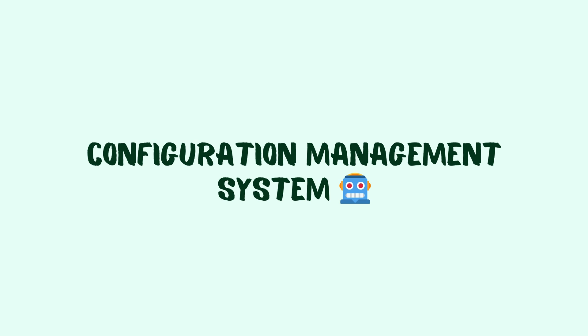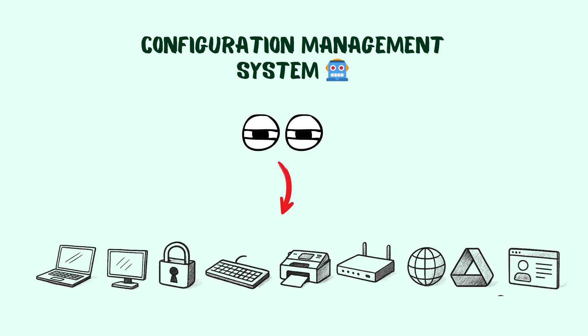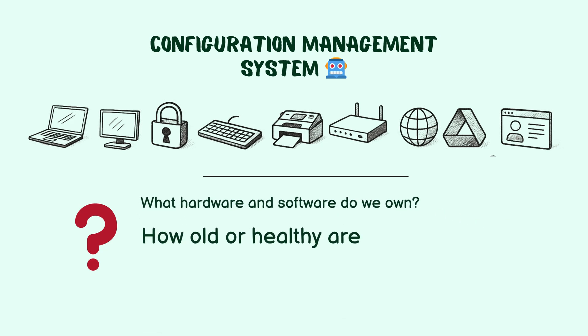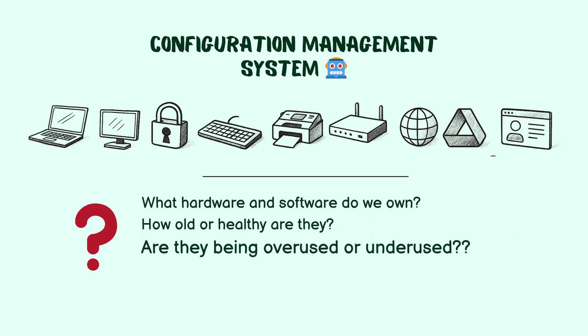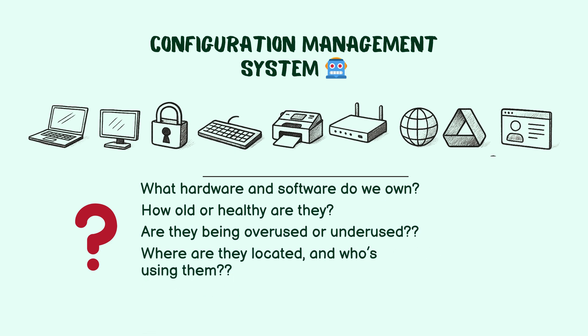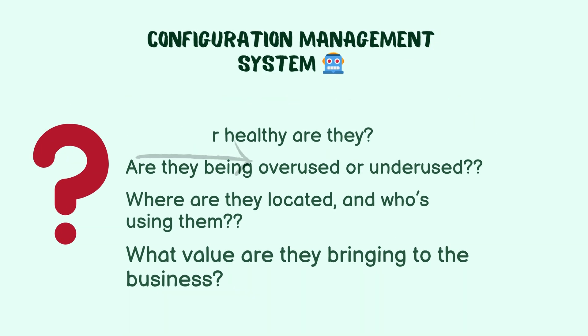We just briefly described the functionalities of a configuration management system. A configuration management system is the process of keeping an eye on your IT assets, covering the answers to these questions: What hardware and software do we own? How old or healthy are they? Are they being overused or underused? Where are they located and who's using them? What value are they bringing to the business?